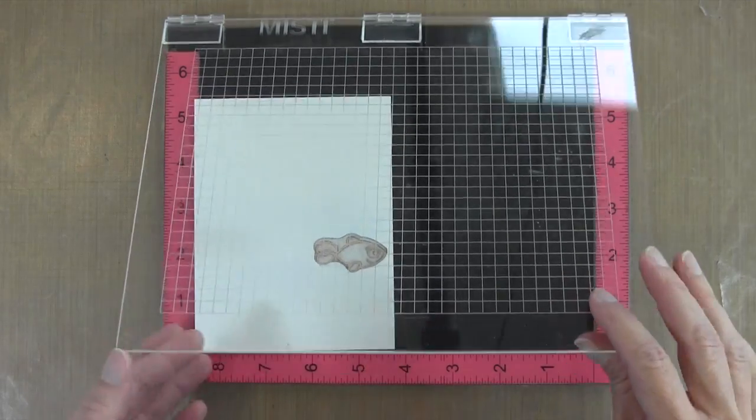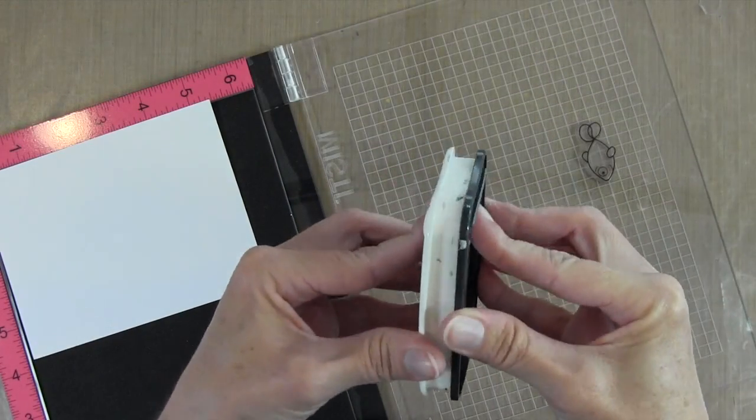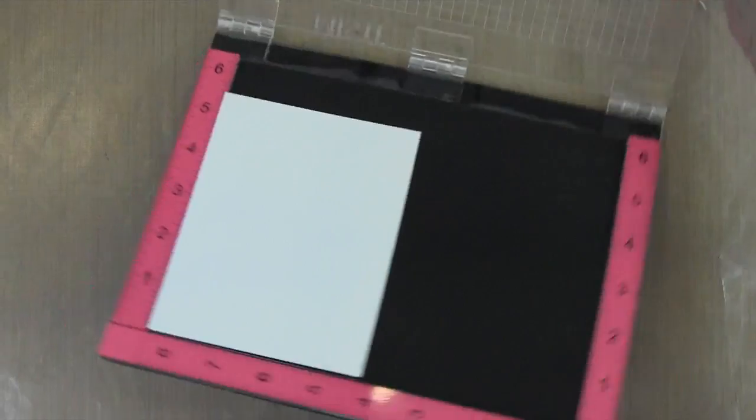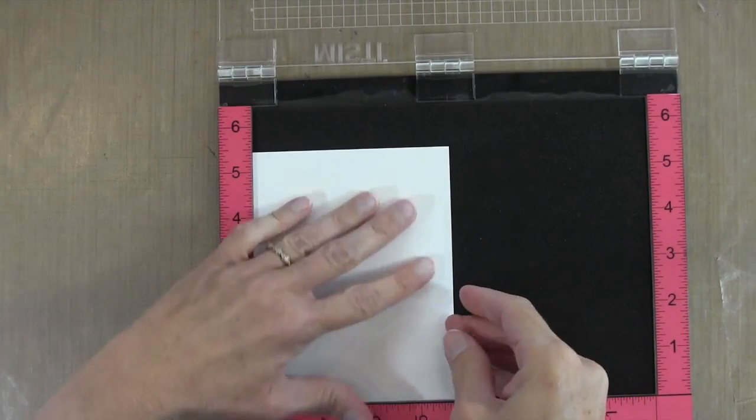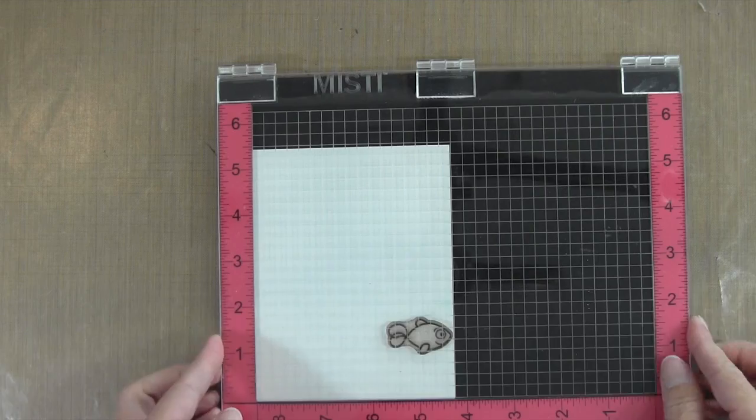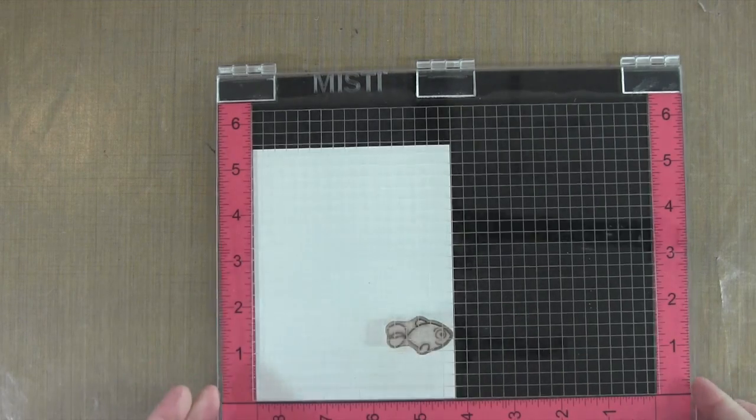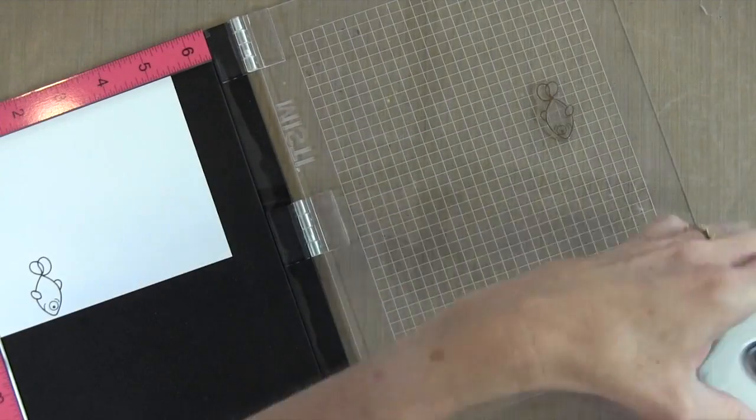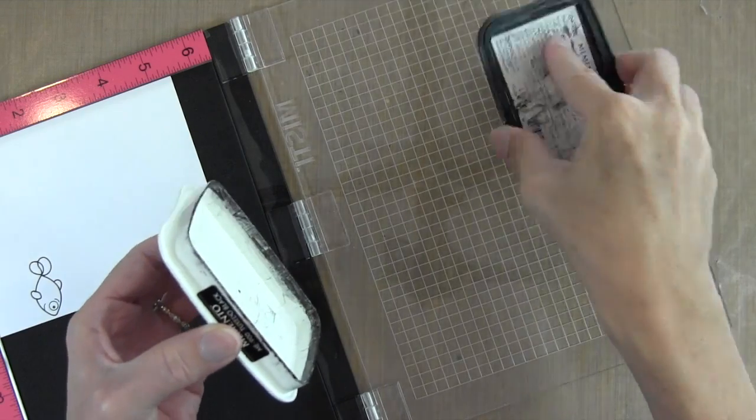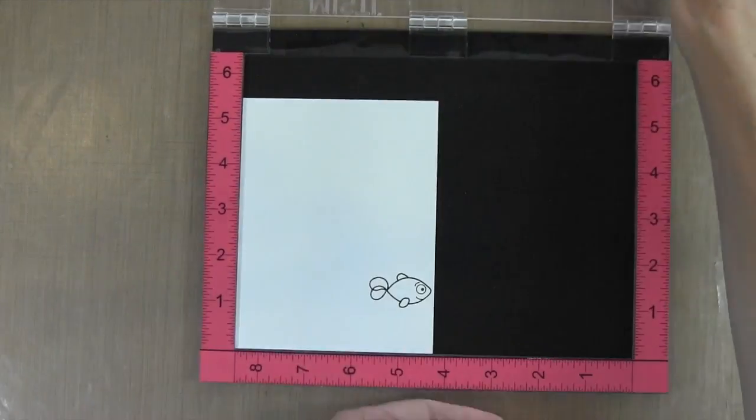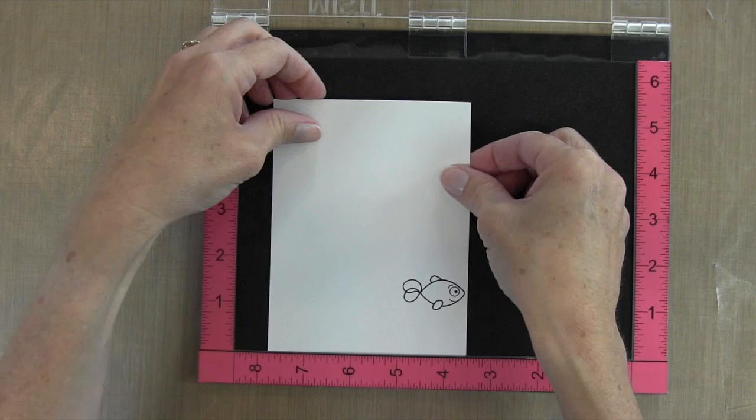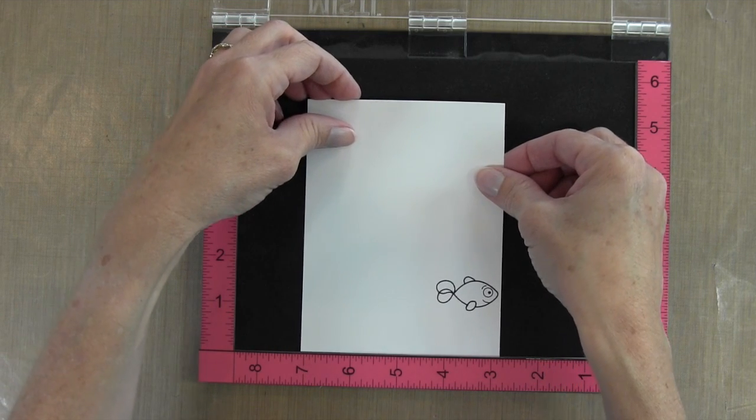I'm going to be inking him up with some Memento tuxedo black ink because I'm coloring him with Copic markers. I'll make sure my paper's in the corner and stamp him. I want all these fish to be exactly in a perfectly straight line, so I'll go ahead and ink him up again and move my paper an inch and a half to the right.